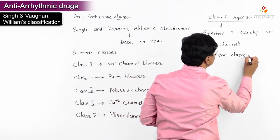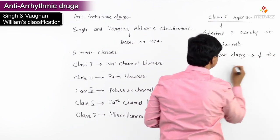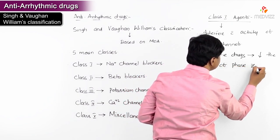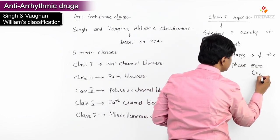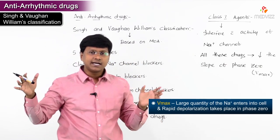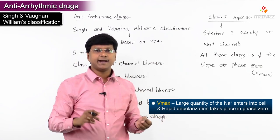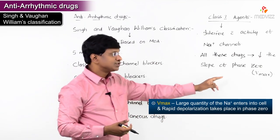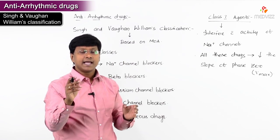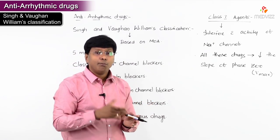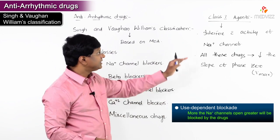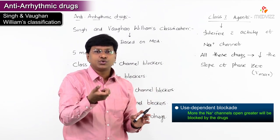All these drugs decrease the slope of phase 0. Phase 0 is considered as V-max because there is opening of the fast sodium channels — a large quantity of sodium enters the cell and rapid depolarization takes place. More frequently the sodium channels open, greater will be the blockade by these drugs.